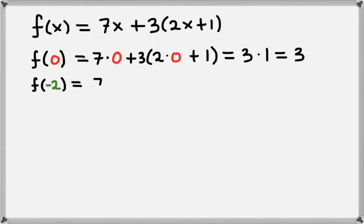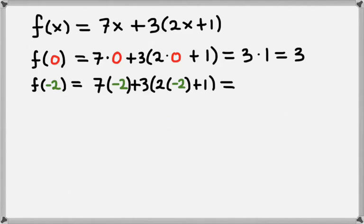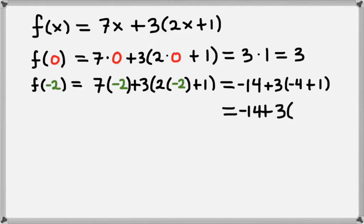Now we have f of negative 2. We have 7, and we want to multiply that — now instead of x we're going to replace that with negative 2. Since this is a negative number, we're going to put it in parentheses so we can keep track of that negative. If we didn't put the parentheses there, we might accidentally think that was 7 minus 2 instead of 7 times negative 2. We're also going to replace the x with negative 2 again, so we have 2 times negative 2, plus 1. Well 7 times negative 2 is negative 14. Then we have plus 3 times the quantity 2 times negative 2, which is negative 4, plus 1. Inside those parentheses, negative 4 plus 1 is negative 3, so we have negative 14 plus 3 times negative 3. That simplifies to negative 14 minus 9, which equals negative 23.